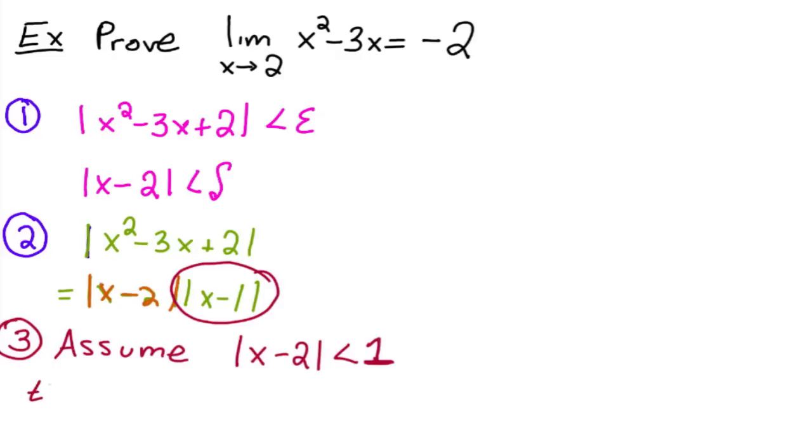Then what this means is that x minus 2 is going to be between negative 1 and 1, if you break up that inequality. And then if you add 2 on through to everything, what you get is x is going to be between 1 and 3.